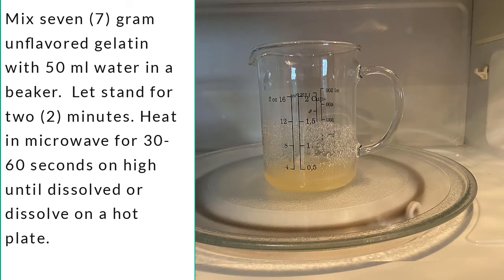Mix 7 grams unflavored gelatin with 50 milliliters of water in a beaker. Let it stand for two minutes and then heat in a microwave for 30 to 40 seconds. Once it is dissolved, take it out.